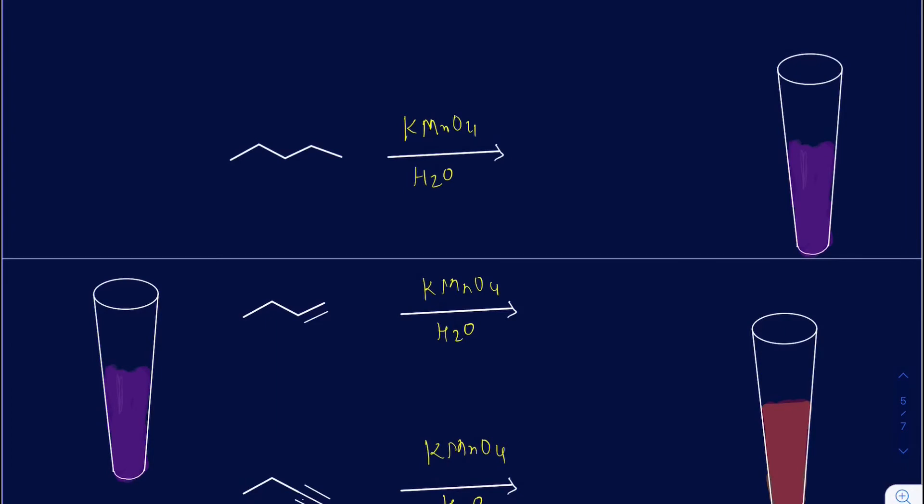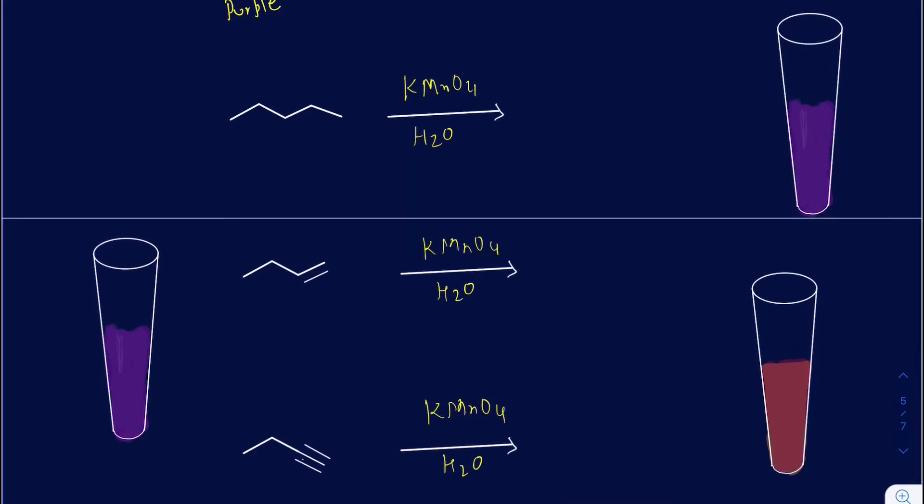In Baeyer test, you use KMnO4. So the KMnO4 originally is going to be purple in color. And if the KMnO4 does react with your compound, it makes a different compound that's MnO2, manganese dioxide. And this particular one is reddish-brown in color. Suppose originally I have an unknown compound and I added some KMnO4 into this test tube, then you will have this purple color.